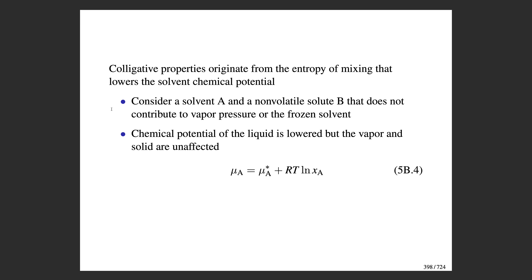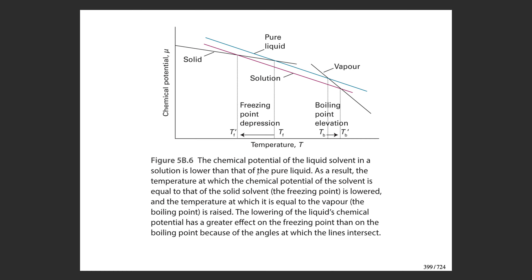According to our definition of an ideal solution, the chemical potential of the solvent is referenced against the chemical potential of the pure solvent (denoted by the star), with the correction factor being the natural log of the mole fraction. For an ideal solution this correction is always negative—the mole fraction is less than one, so its natural log is negative. That means the chemical potential of the solvent in solution is always lower than that of the pure solvent.